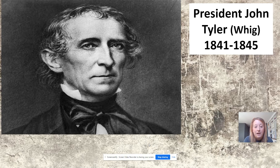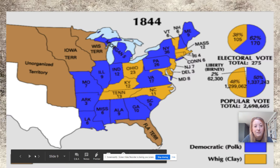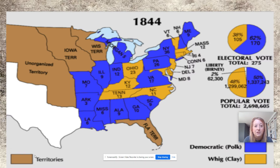President John Tyler — originally a Democrat who was also shunned by the Whigs — assumed the presidency after William Henry Harrison's death, about a month after his inauguration. And Tyler worked very hard to convince Congress to annex Texas throughout his presidency. He did a lot of the legwork, but unfortunately was unsuccessful.